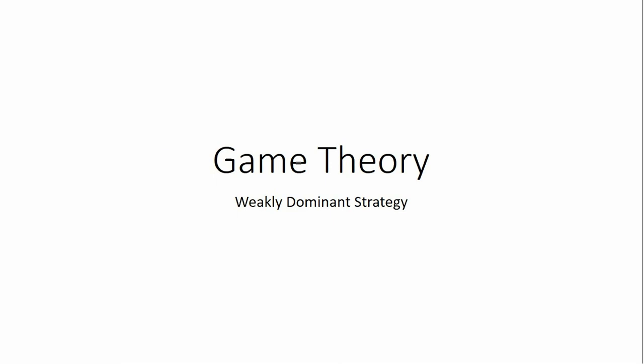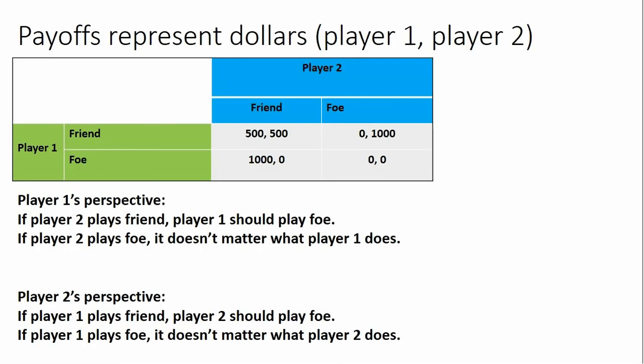Game theory video. We're going to look at weakly dominant strategies. We have a game where the payoffs represent dollars. The first number are the dollars that go to player one. The second number are the dollars that go to player two. More dollars are obviously better. Players have a strategy. They can play friend or they can play foe.